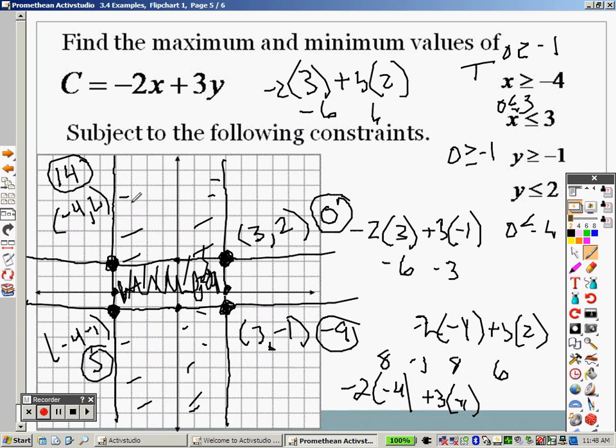So, whichever one gives me the max is my max. Well, whichever one's the biggest. This right here is your max, because that gives me the biggest number. So, that is your max. Whichever one gives me the lowest number, which is down here. This is the lowest number. So, that is your min, and there is your max and min.